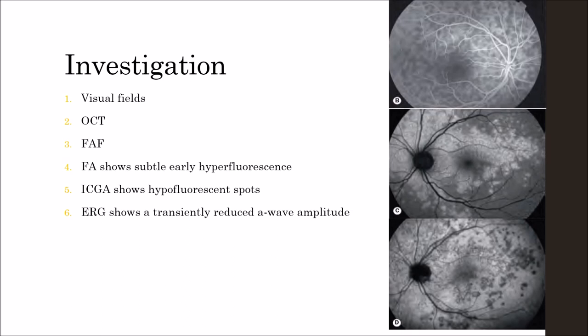OCT may show inner segment to outer segment junction disruption and dome-shaped outer retinal lesions. Fundus autofluorescence shows hyper-autofluorescence spots corresponding to the macular lesions, visible during active inflammation. As seen in this picture, there are hyperfluorescent spots in the fundus area during active inflammation.